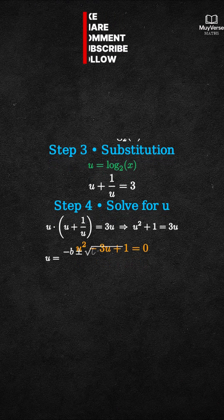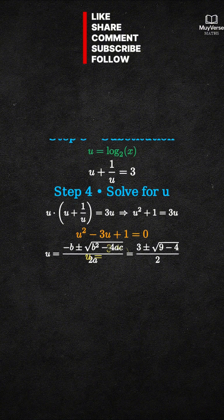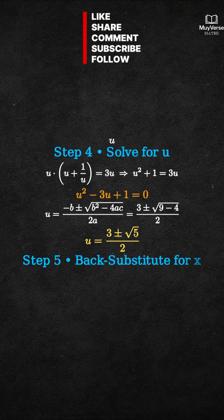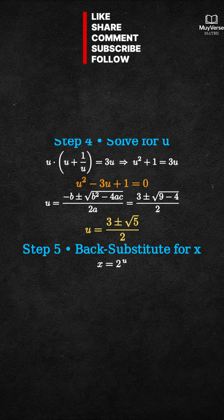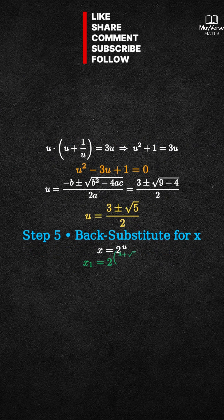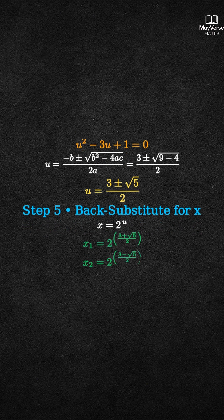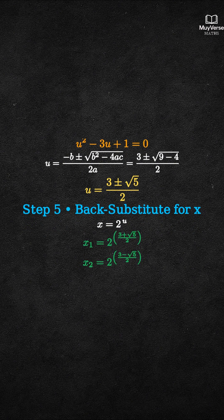Step 5: convert each u value back to x using u equals log base 2 of x, which means 2 to the u equals x. First case: u equals (3 plus square root of 5) over 2, so x equals 2 to the power of (3 plus square root of 5) over 2. Second case: u equals (3 minus square root of 5) over 2, so x equals 2 to the power of (3 minus square root of 5) over 2.